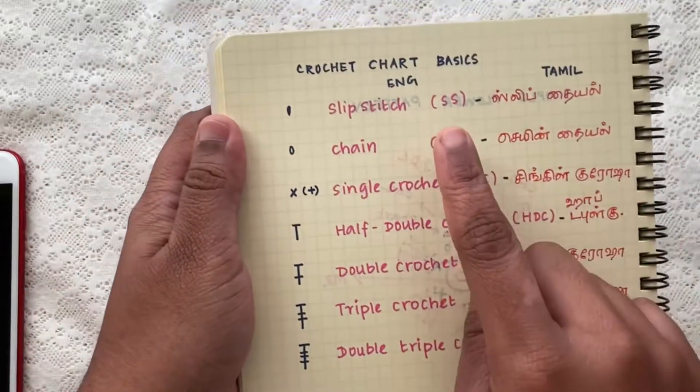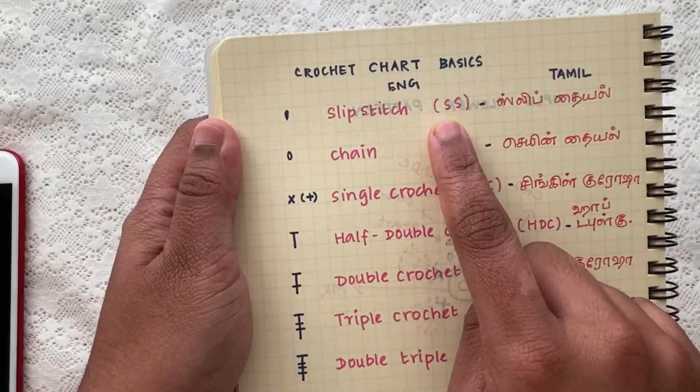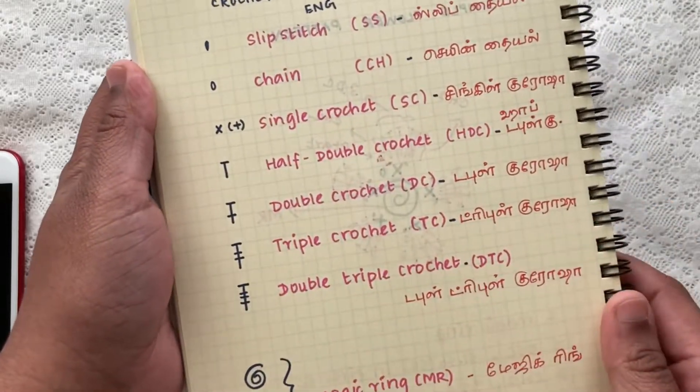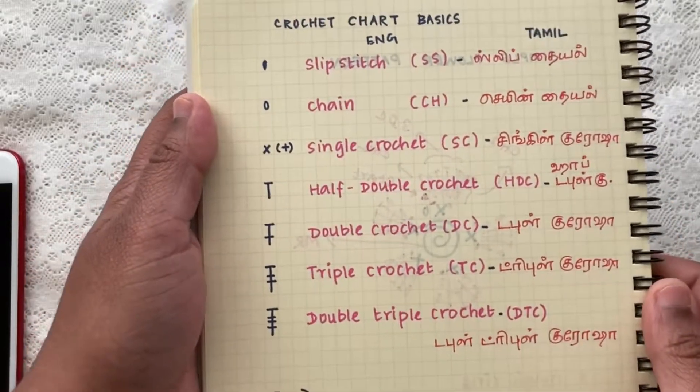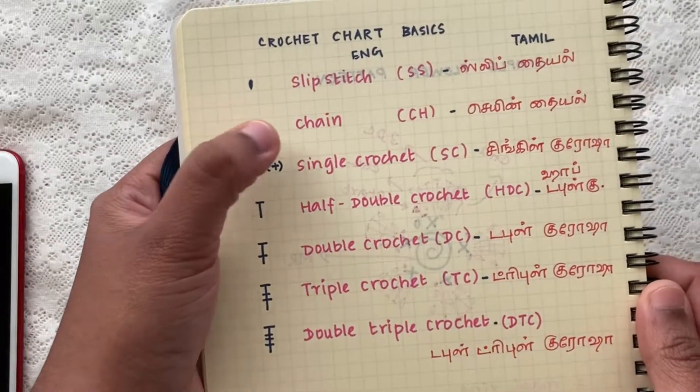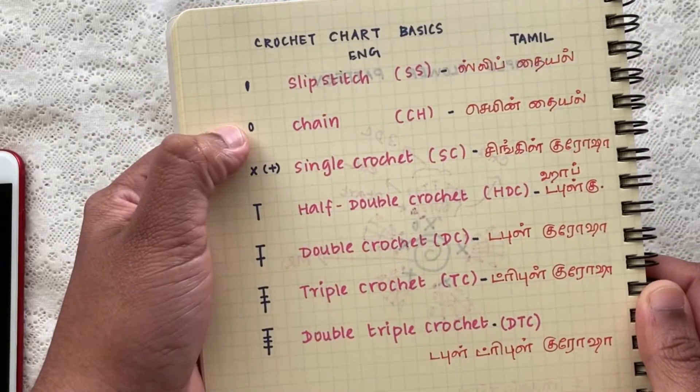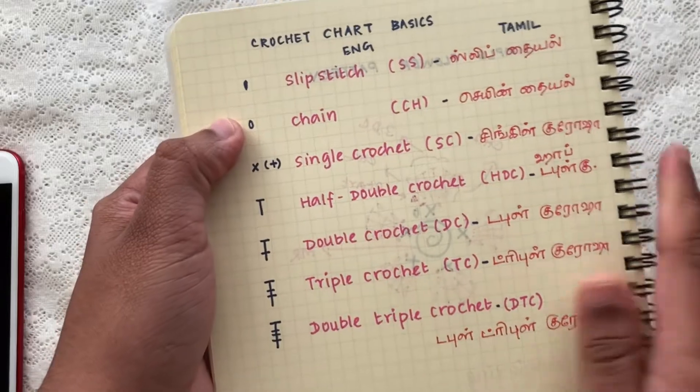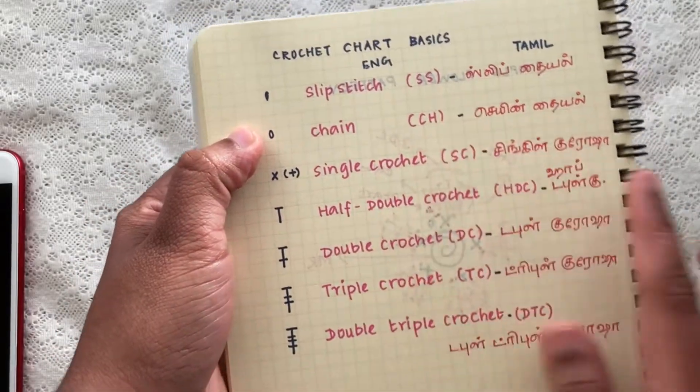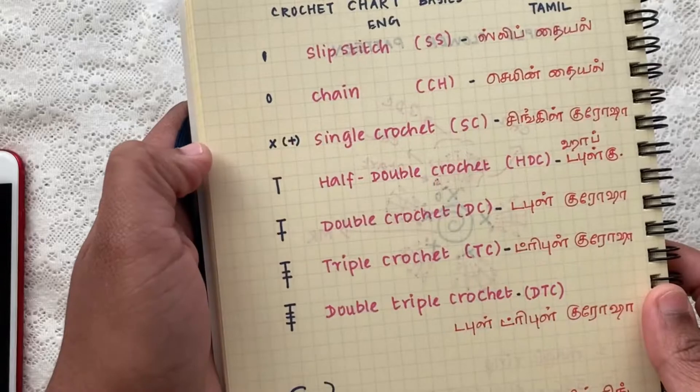It is sometimes represented as S-S or sometimes as SL-ST for slip stitch. And the next one is chain. Chain is represented by an oval symbol and its abbreviation is CH.